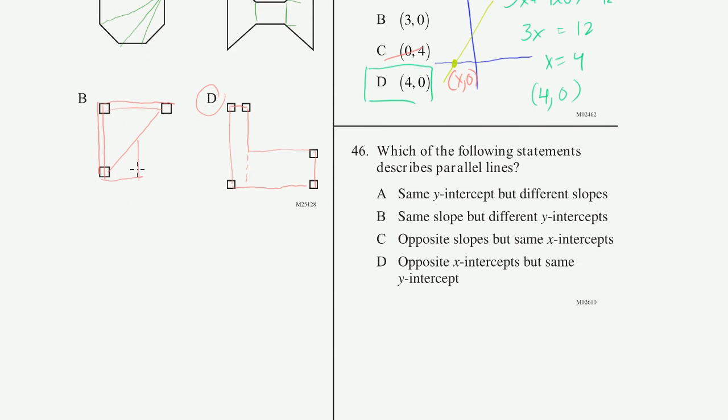Problem 46. Which of the following statement describes parallel lines? Parallel lines are just two lines that never intersect, that have the same slope, and they don't sit on top of each other. Same y-intercepts, but different slopes? No, I just said they have to have the same slope. And they never intersect, so they can't have the same y-intercepts. Same slope, but different y-intercepts? That looks right. They're parallel, but they're not on top of each other. Opposite slopes? No, if they had opposite slopes, they would intersect. So our answer is B.